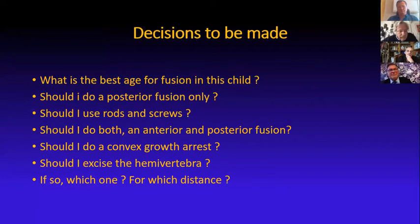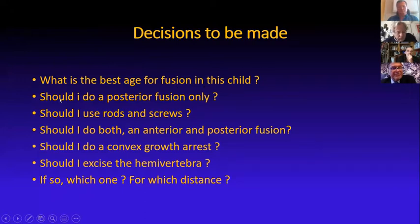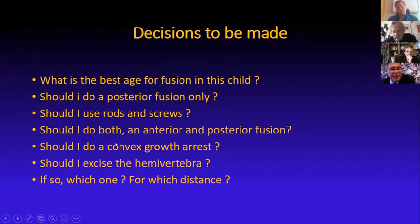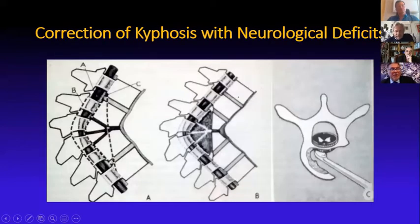There are decisions to be made: what is the best age to treat children, as this is most frequent in children? Should I do it posteriorly only? You have to consider the growing factor until you can correct the curve. Should I use rods, screws, or both? Should I arrest convex growth, or excise a vertebra, and for which distance? The most common procedure I have been doing in severe kyphosis or kyphoscoliosis with neurological deficit is this kind of decompression.